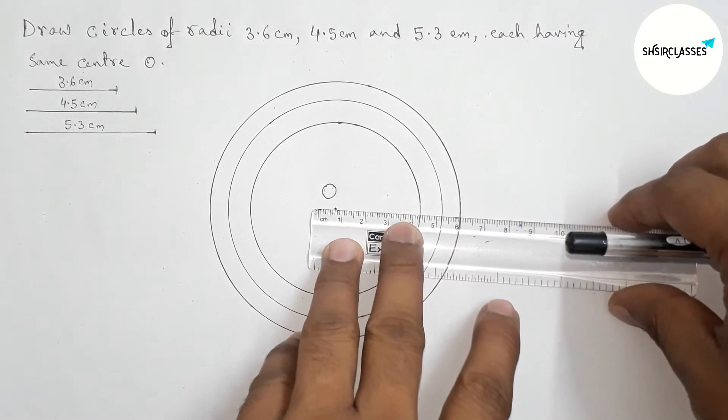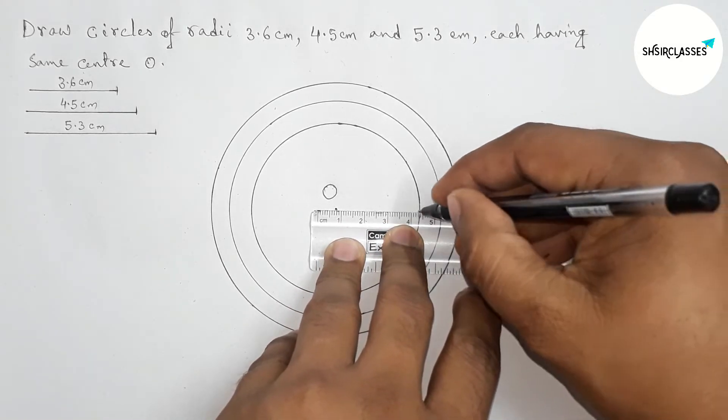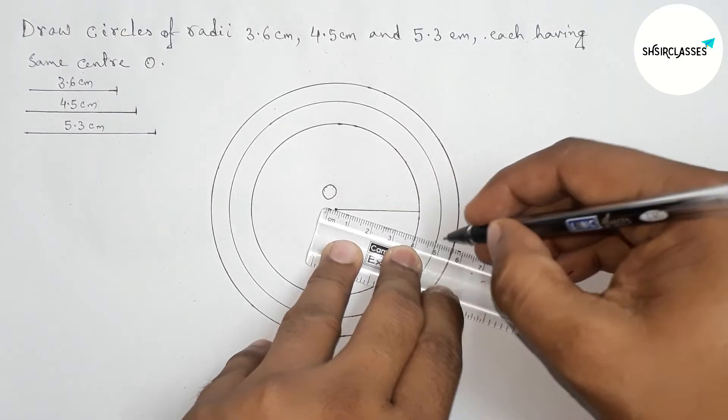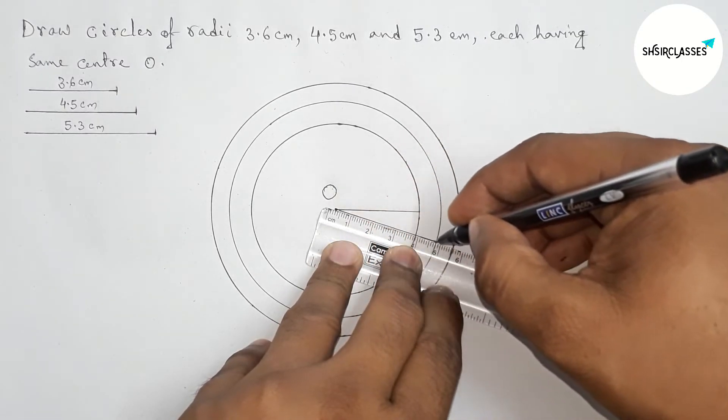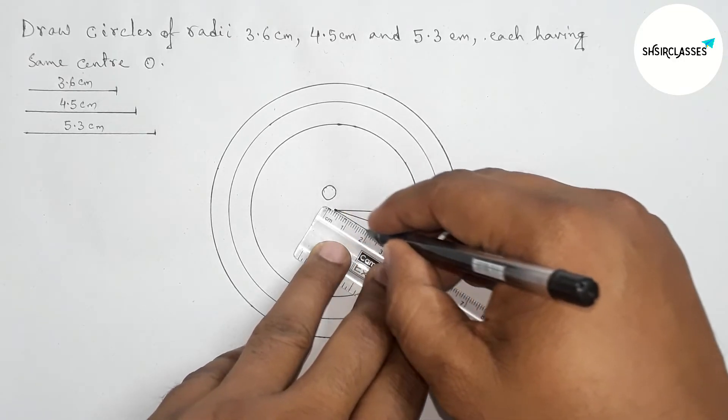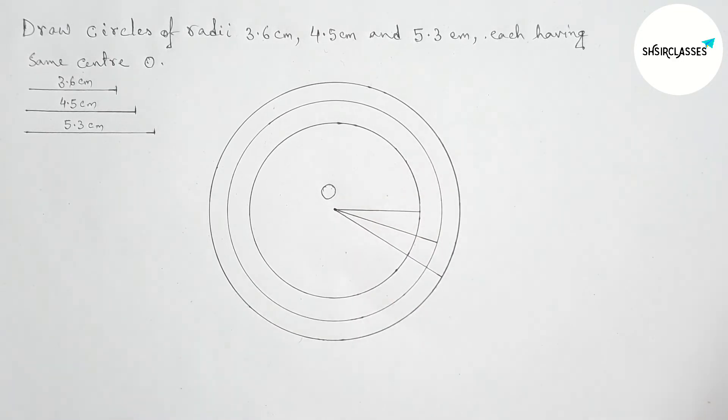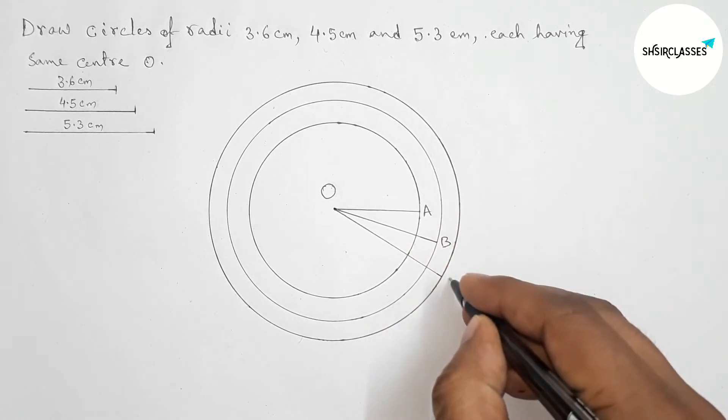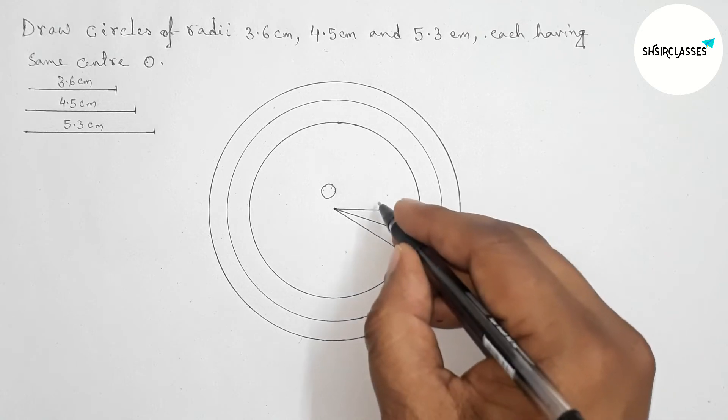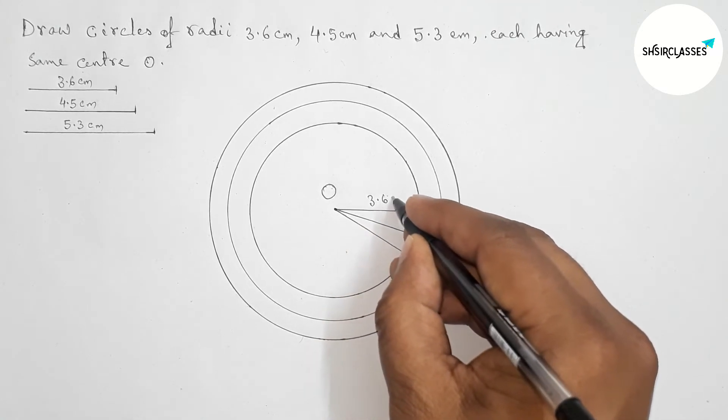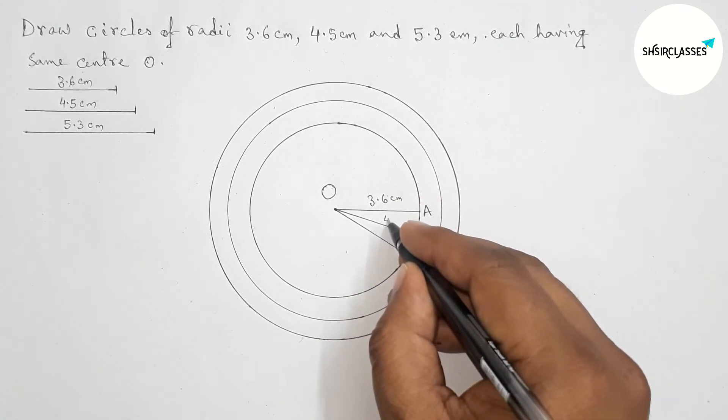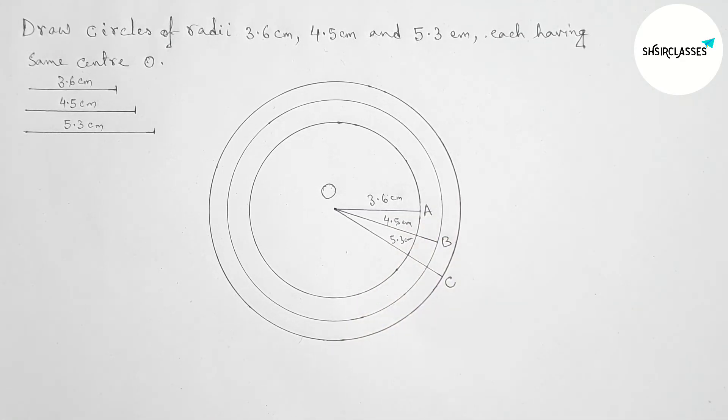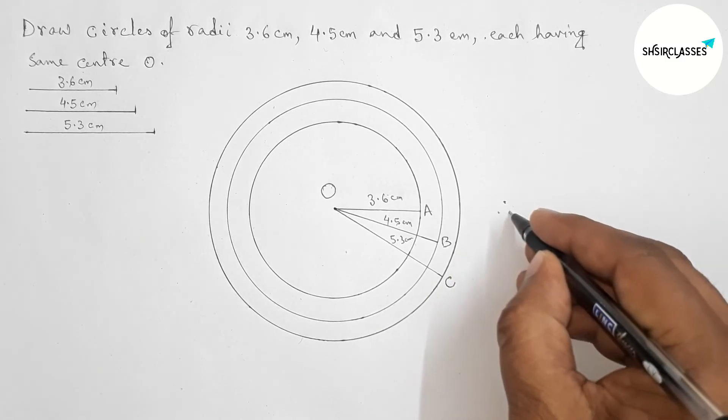Now joining from center to the circumference. First joining this, this is the first radius 3.6. Now joining this radius 4.5, and last joining this radius 5.3 centimeters. Taking points here A, B, C. So this is 3.6 centimeters, this one is 4.5 centimeters, and this one is 5.3 centimeters.